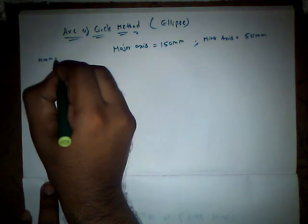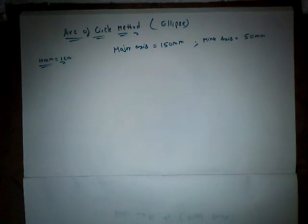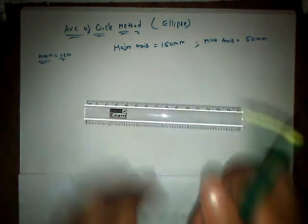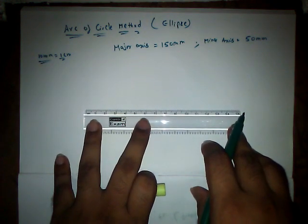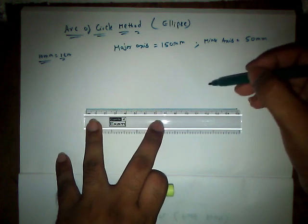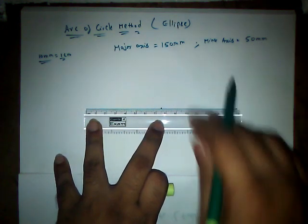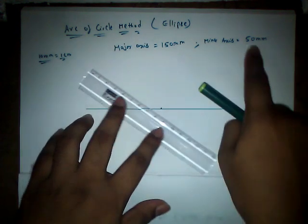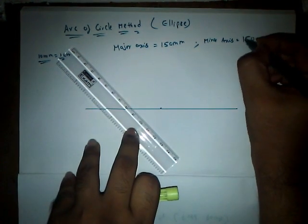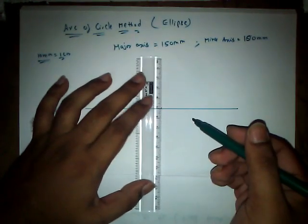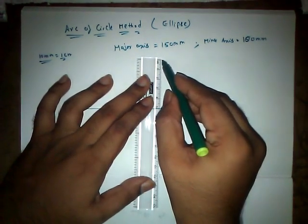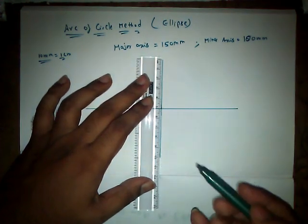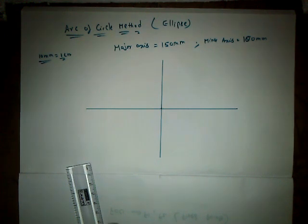So 10mm is nothing but 1cm guys, just remember. I am taking the scale. 150mm is nothing but a 15cm scale. I am going to take the center, that is 7.5. Now we shall draw the minor axis which is about 100mm. So 5cm to the top and 5cm to the bottom. So this is our minor axis. We finally got the major axis and the minor axis.